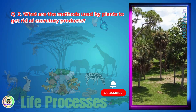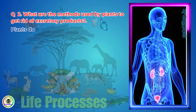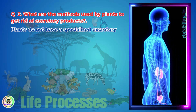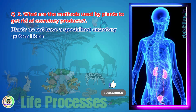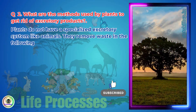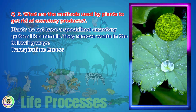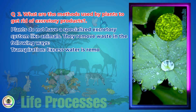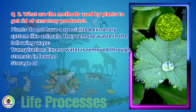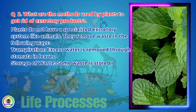Question 2: What are the methods used by plants to get rid of excretory products? Plants do not have a specialized excretory system like animals. They remove waste in the following ways: Transpiration — excess water is removed through stomata in leaves. Storage of waste — some waste is stored in leaves, bark, or fruits, which later fall off.